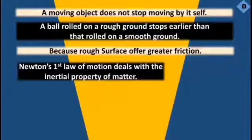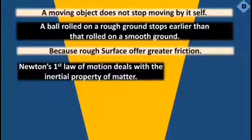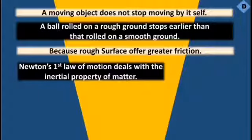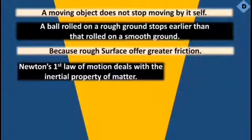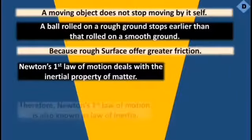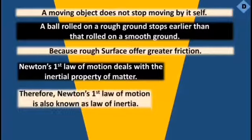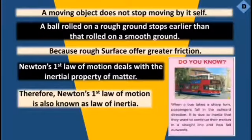Newton's first law is also called the law of inertia. It is called the law of inertia because inertia refers to a body's ability to resist change in its state — whether it is at rest or in motion. As we discussed inertia's definition in the previous lecture, Newton's first law is also known as the inertial property of matter.